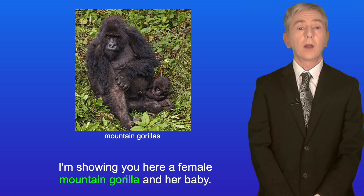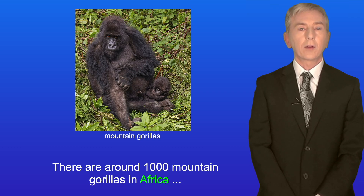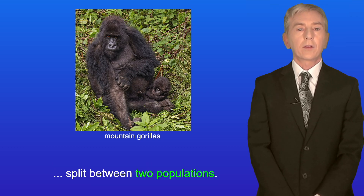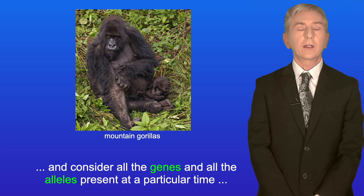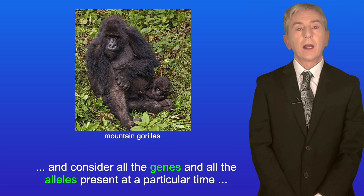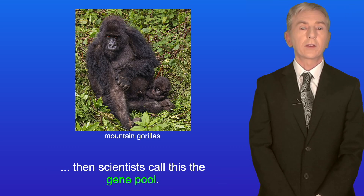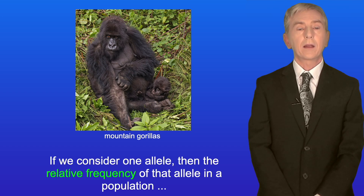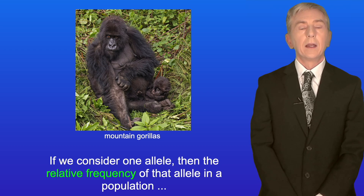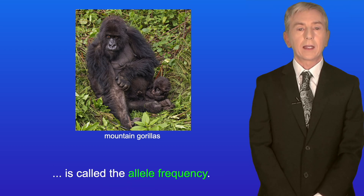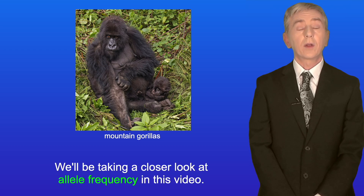I'm showing you here a female mountain gorilla and her baby, and there are around 1,000 mountain gorillas in Africa split between two populations. Now if we take any population of organisms and consider all the genes and all the alleles present at a particular time, then scientists call this the gene pool. And if we consider one allele, then the relative frequency of that allele in a population is called the allele frequency, and we'll be taking a closer look at allele frequency in this video.